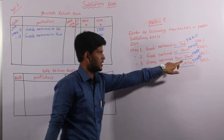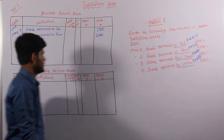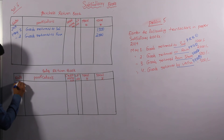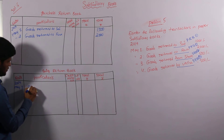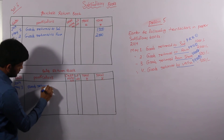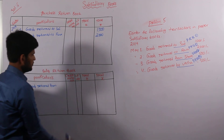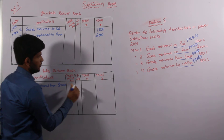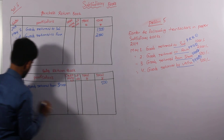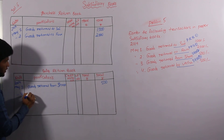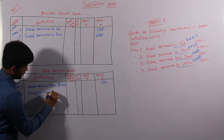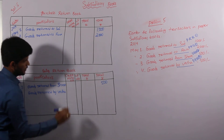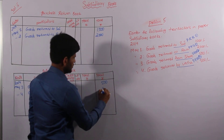Goods return from Sri Sathwaite will go to the Sales Return Book. That will be our second book. In every new book we have to enter the year, month and day of the transaction. Goods return from Sri Sathwaite is 500. Next transaction, date is the 4th, goods return by Veda — this is also 500.